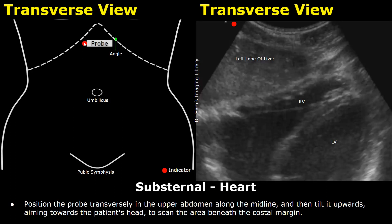The FAST scan starts by placing the probe in the midline transversely in the upper abdomen, just below the sternum. It is then tilted or angled towards the patient's head, and the area beneath the costal margins is scanned. Placing the probe in this manner will produce this type of image.